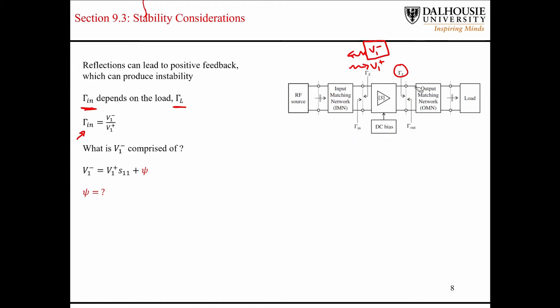Let's derive the analytical formula and see what that looks like. We want to come up with an expression for the backwards traveling wave on the input. Some of that backwards traveling wave is going to be the input wave times S11 — that's the amount of the input wave that gets reflected right at the input. But then there's also another term which takes into account waves traveling back and forth, bouncing around, and eventually making their way back to the output side of this two-port network.